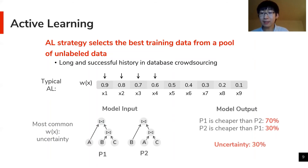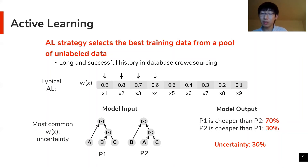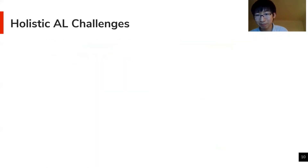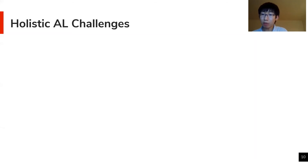The most common w(x) is called uncertainty, which describes the model's confidence on the label of x. For example, given two query plans, the model could predict that plan p1 is cheaper than p2 with 70% confidence, meaning the uncertainty is 30%. Such an uncertainty metric is generally available among common ML techniques. Interestingly, when we tried to apply AL for this problem, we observed a number of holistic AL challenges arising from this practical database deployment scenario that have not been a focus in the literature before.